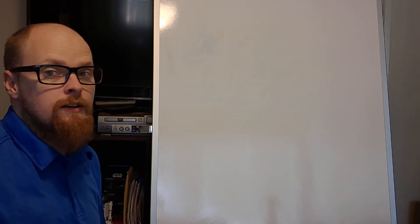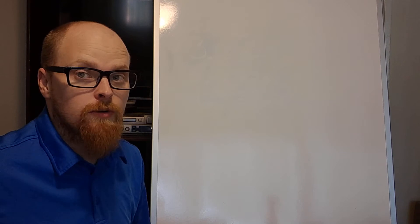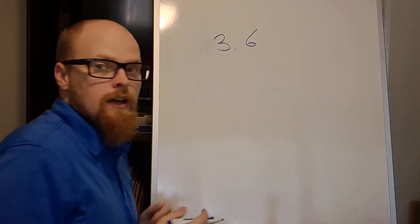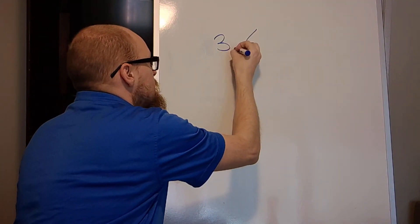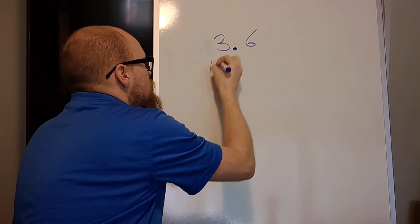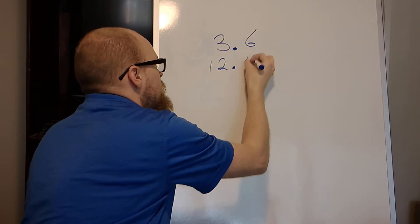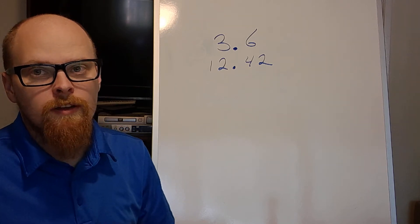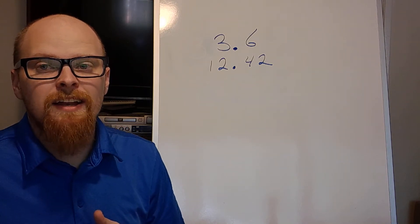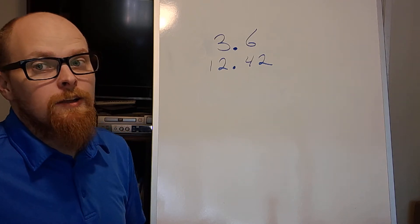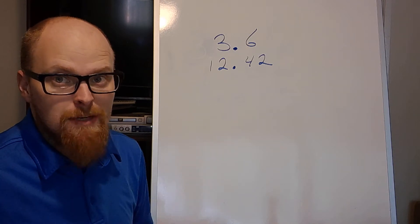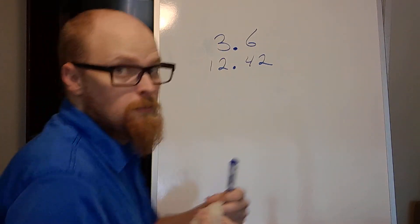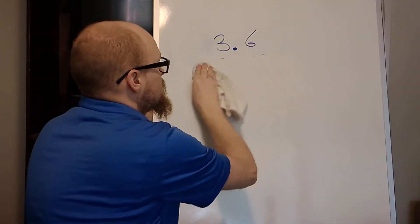When you have it rewritten, it doesn't matter where your decimal is. So let's say I have 3.6, and I'm going to multiply that by, let's say, 12.42. What's really important on this, rather than lining your decimals up, is lining your numbers up. We don't want our decimals lined up when we do this.